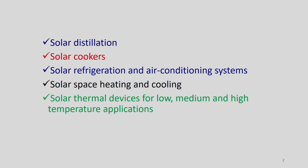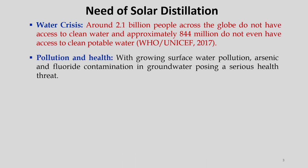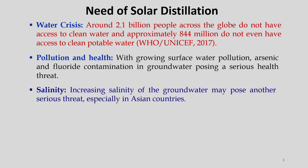Let us start with solar distillation and what is the need for it. Before we understand the need, let us study a few important issues. First is the water crisis: as per the World Health Organization, around 2.1 billion people across the globe do not have access to clean water, and approximately 844 million do not even have access to clean potable water. The second important issue is pollution and health — with growing surface water pollution, arsenic and fluoride contamination in groundwater pose a serious health threat. The third issue is salinity — increasing salinity of groundwater may pose another serious threat, especially in Asian countries.